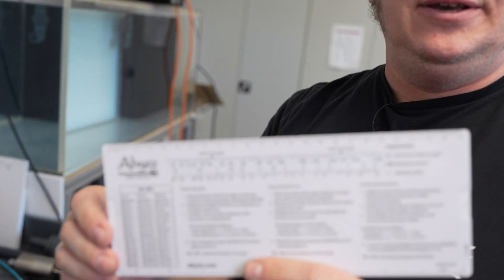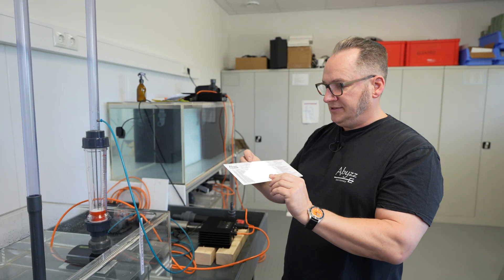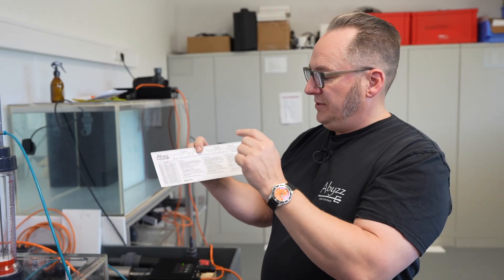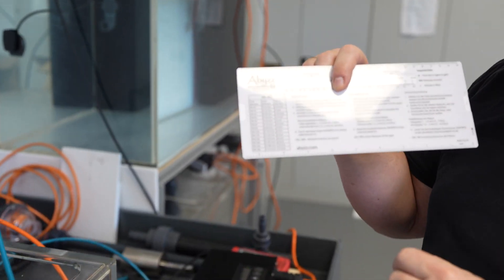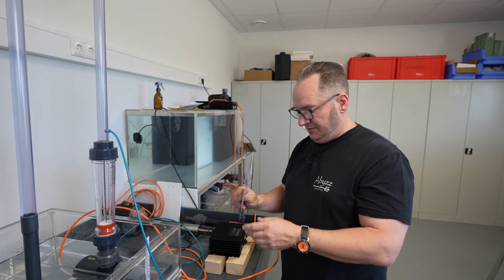And this one actually also features the flow in US gallons, so in case you're on the imperial side of things, you can use the same tool. It's also got the manual in German, English and French, and a very handy conversion scale between European and imperial pipe diameters just for reference.